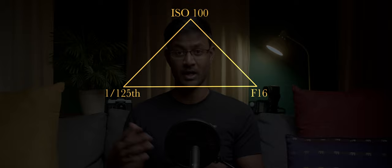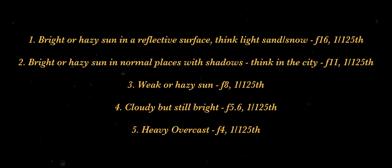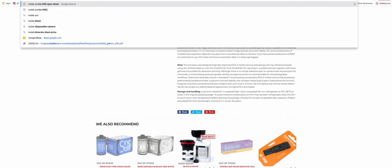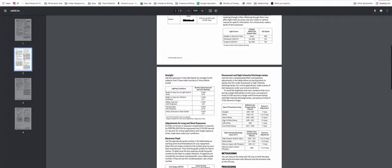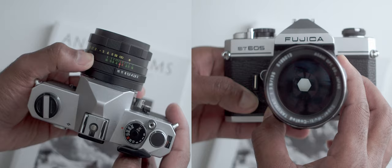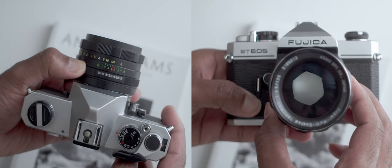So f16 and the shutter speed, which is kind of the inverse of your ISO, is where we're going to begin, and using that there are four or five different conditions that you'd have to remember. Go ahead and pause the video to take a screenshot or get your notepad out to write them down — but these are the conditions to remember. You can also find this information in film spec sheets, so depending on what film you're shooting just go on Google and look for their spec sheet and you should find this information there as well. As you can see we started with the f16 aperture and then as we moved down each condition we opened up the aperture by one stop, letting in one stop more of light.